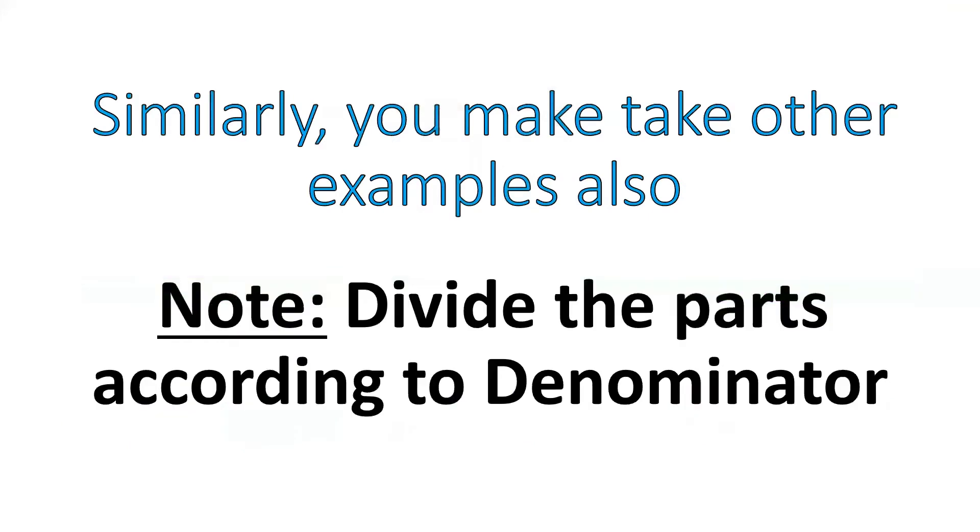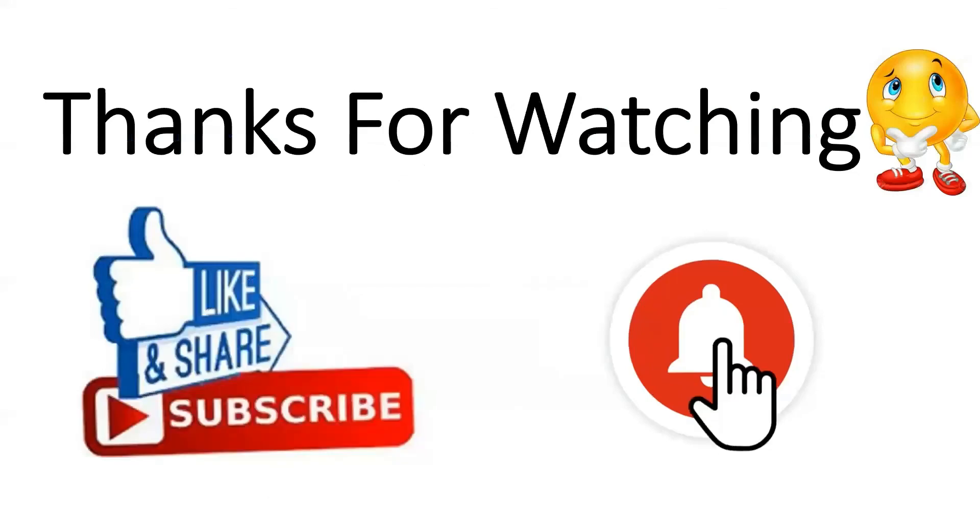So, this is about how to represent rational numbers on number lines. Now, let's take some example. But, what you will divide, I mean, 0 by 7, 1 by 7, which I had taken, how many parts to make, we have to decide according to denominator. So, I hope this is clear. Thanks for watching. Do like, share and subscribe.